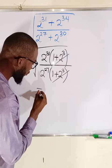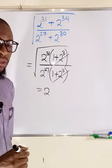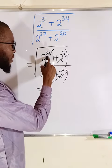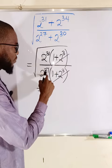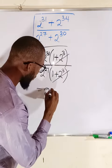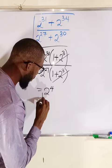You take a single base, which is 2. Then you subtract the exponents. 31 minus 27, which is equal to 4. Remember to bring the square root.